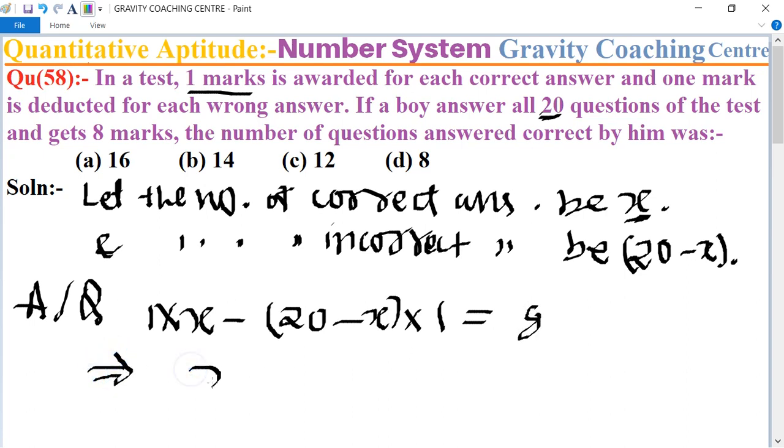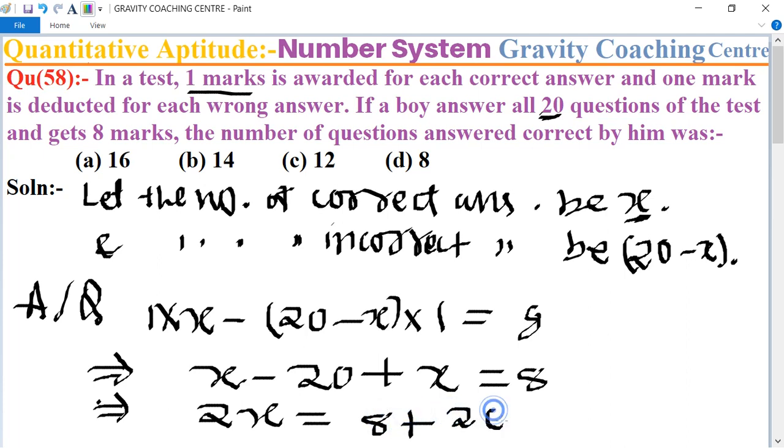Implies that x minus 20 plus x equal to 8, and implies that 2x equal to 8 plus 20 equal to 28.